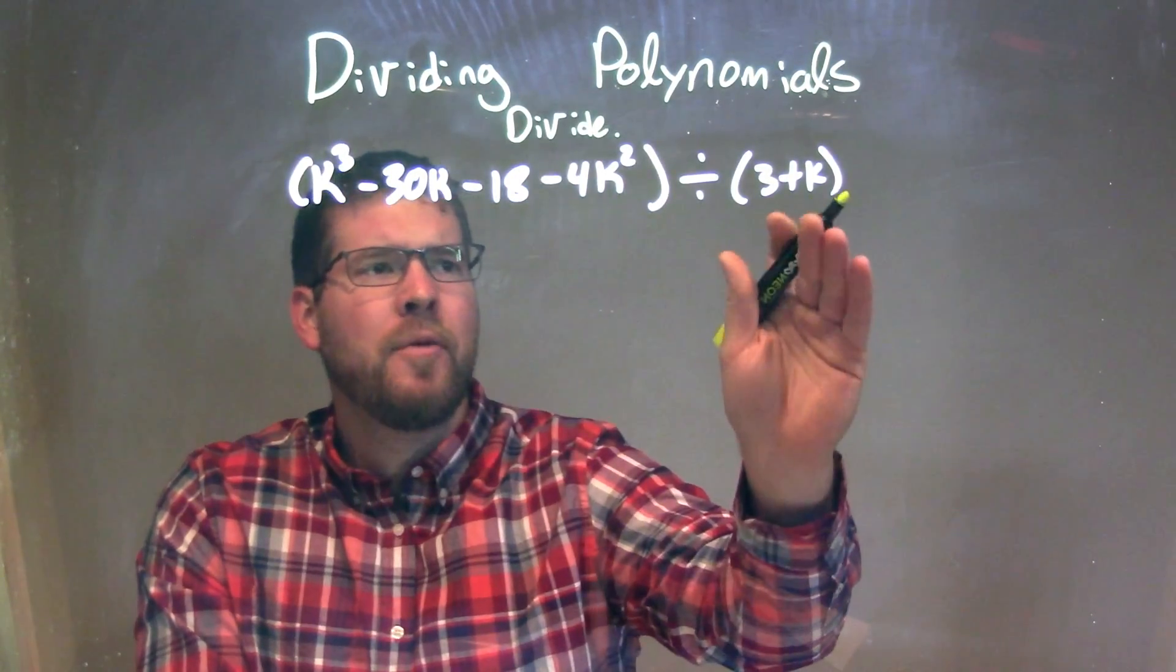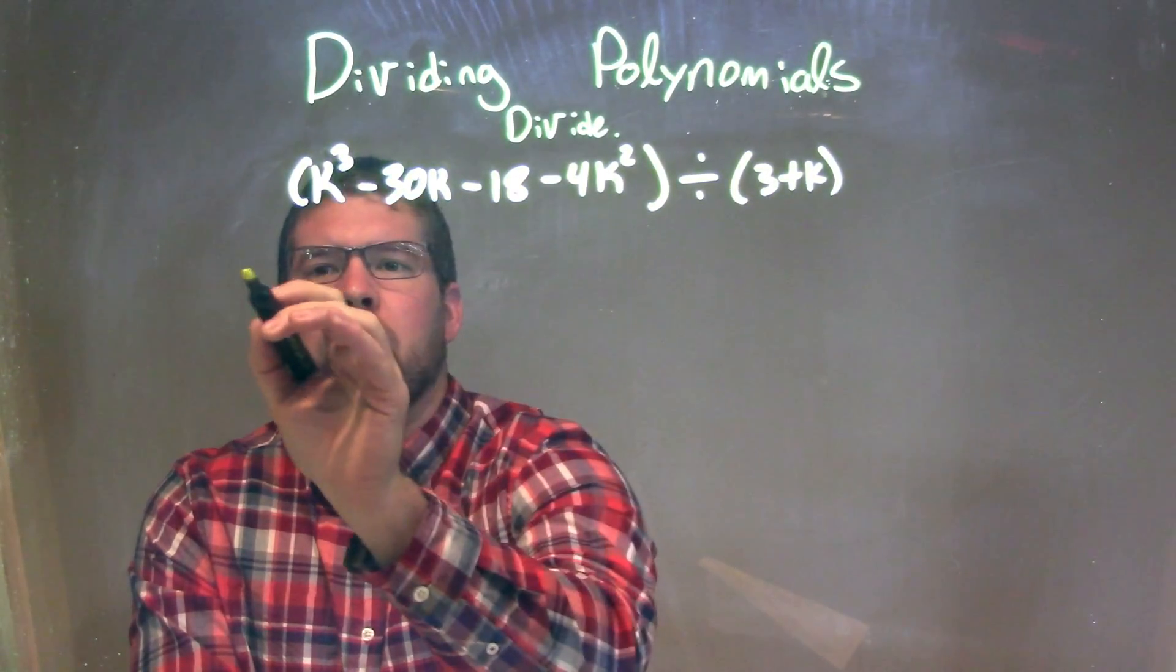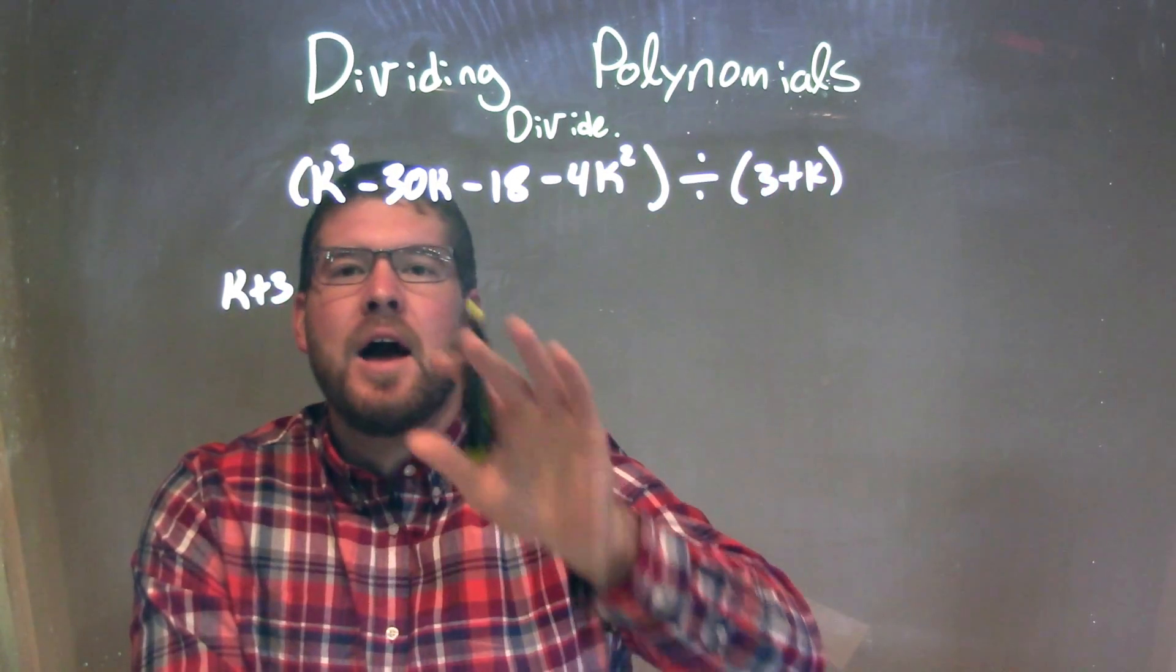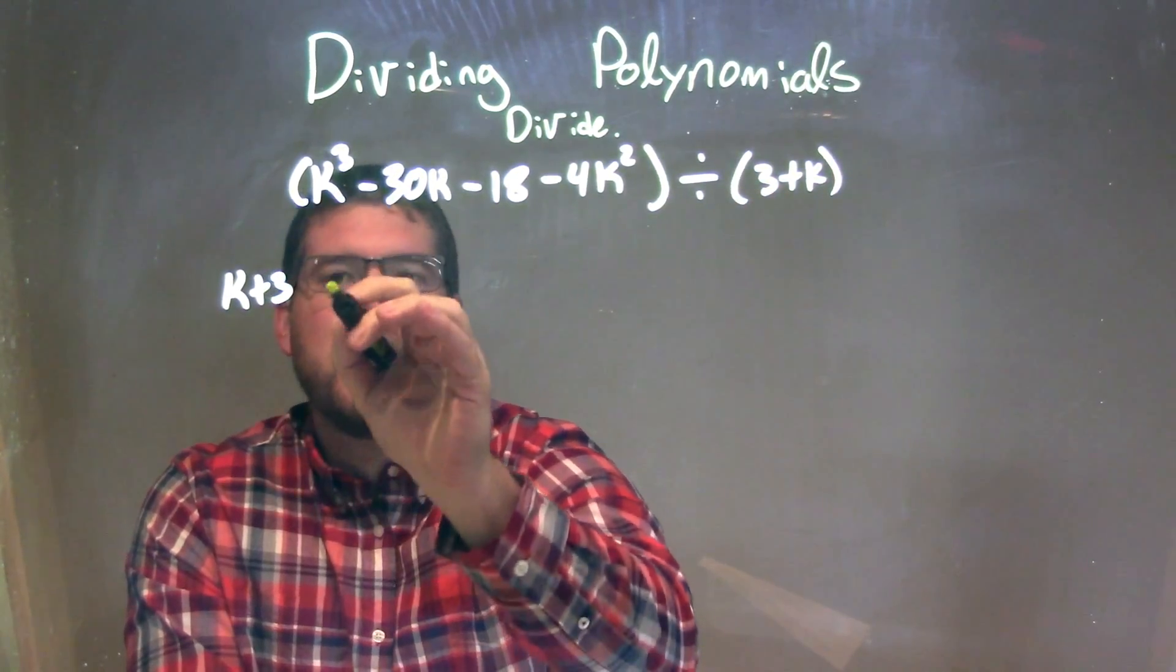So when I write my divisor, my 3 plus k, I'm going to rewrite it here as k plus 3. And since it's within the parenthesis, I can rearrange it, I'm allowed to rearrange that.